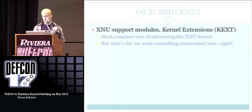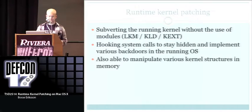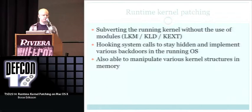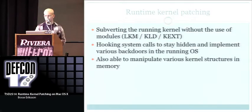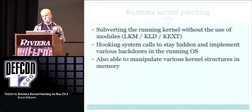We're going to skip the KEXTs approach and instead runtime patch the kernel directly. Runtime kernel patching is basically subverting the kernel without use of kernel modules. We're going to hook system calls to stay hidden and implement various backdoors in the running OS by just patching the kernel directly in memory. You can also manipulate various kernel structures to do all kinds of other things.